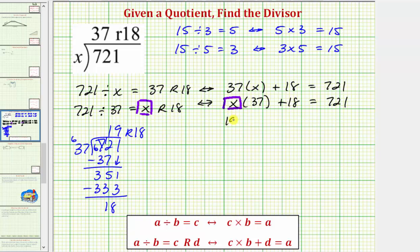More specifically, 19 times 37 plus 18 equals 721 and therefore it's also true that 37 times 19 plus 18 equals 721. So the value of x is equal to 19 and now we know the divisor of the original quotient.